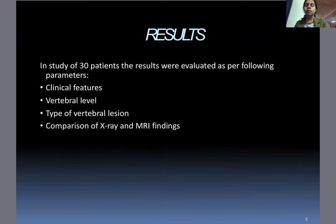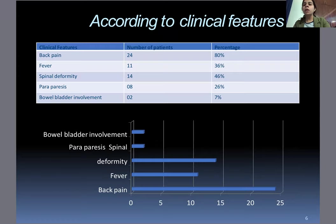Results: In the study of 30 patients, results were evaluated per the following parameters: clinical features, vertebral level, type of vertebral lesion, and comparison of X-ray and MRI findings. According to clinical features, the maximum number of patients presented with back pain, followed by fever, spinal deformity, paraparesis, and bowel/bladder involvement.